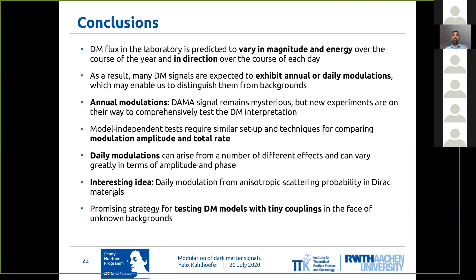But one really interesting idea, in my opinion, is these daily modulations from anisotropic scattering probabilities, which you get, for example, in Dirac materials. And these materials actually offer a very promising strategy for testing dark matter models in completely unprobed parameter regions — very small masses and tiny couplings — even when backgrounds may be difficult to control. Thank you very much.